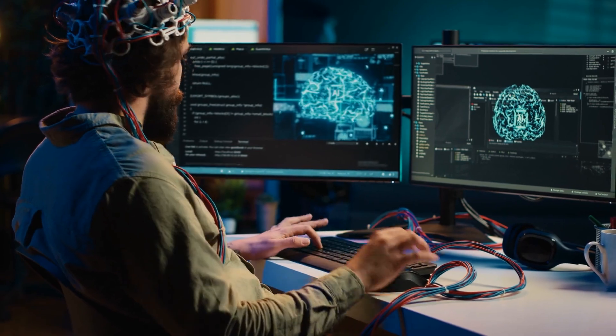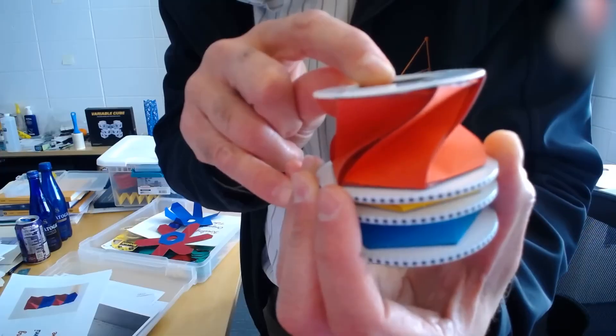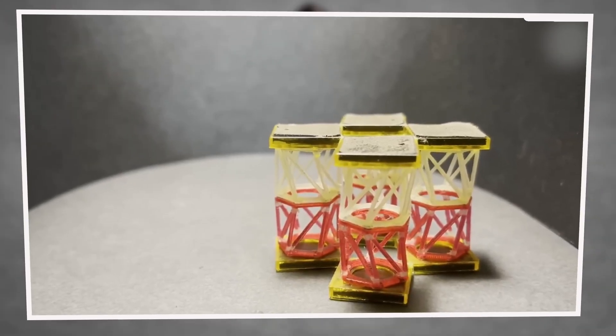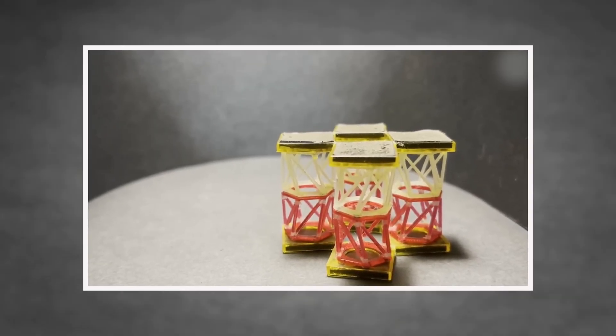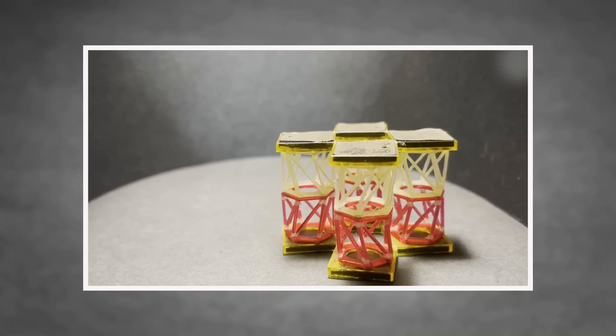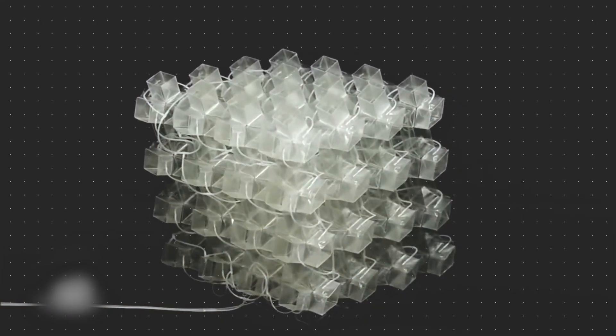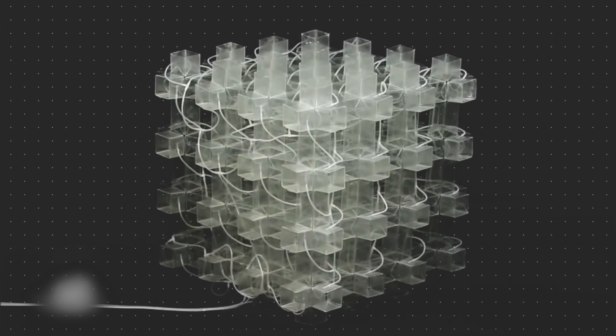A single metabot made of a few chirally arranged Kresling tubes can already produce complex motion under external magnetic fields. Now imagine replicating that kind of behavior across thousands or millions of interconnected units. It's not just a question of manufacturing. It's a problem of control.